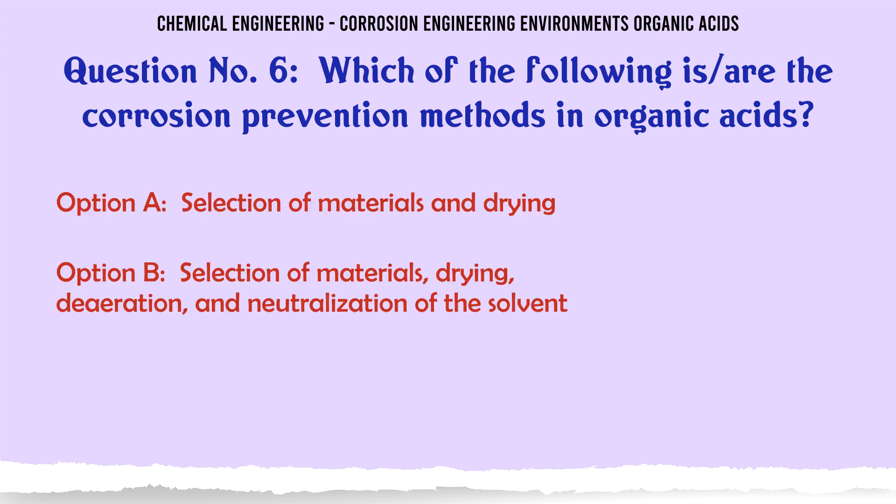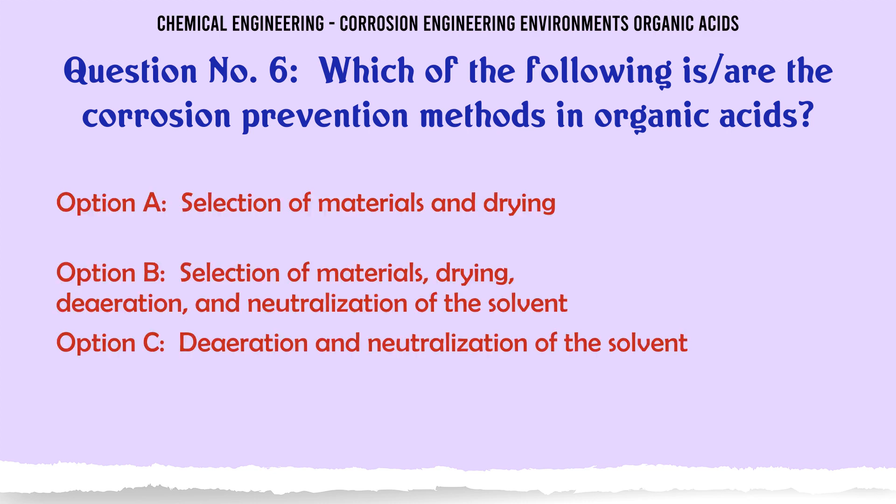Which of the following are the corrosion prevention methods in organic acids? A. Selection of materials, B. Selection of materials and drying, C. Selection of materials, drying, de-aeration, and neutralization of the solvent, D. De-aeration and neutralization of the solvent, E. Drying and de-aeration.